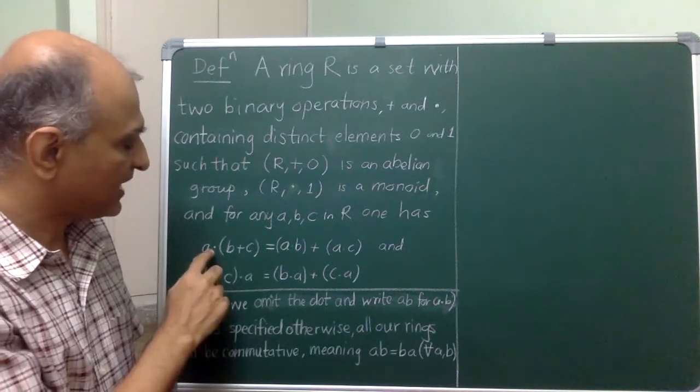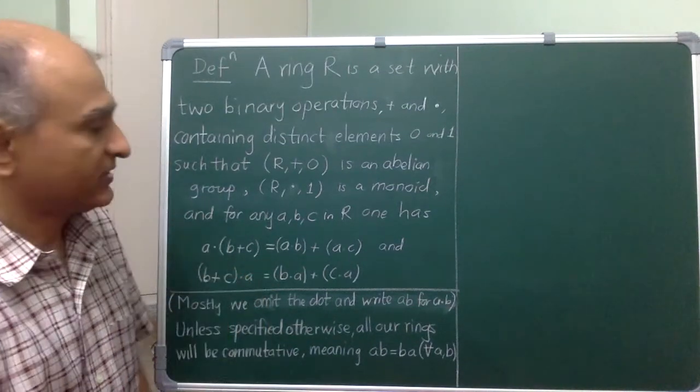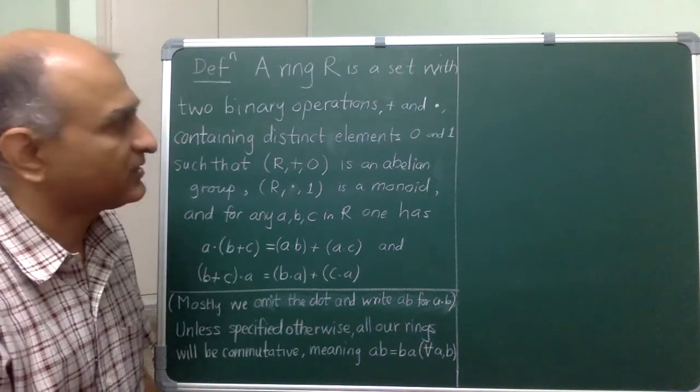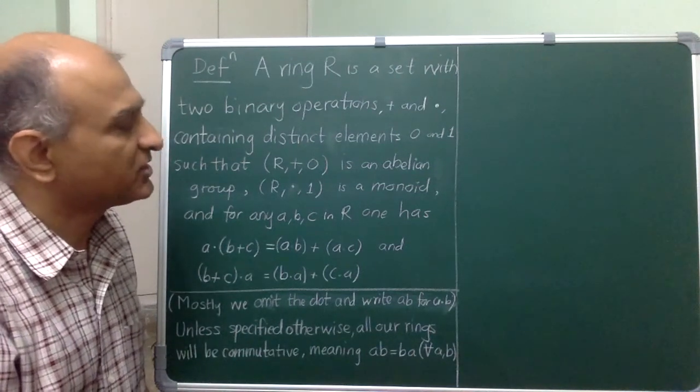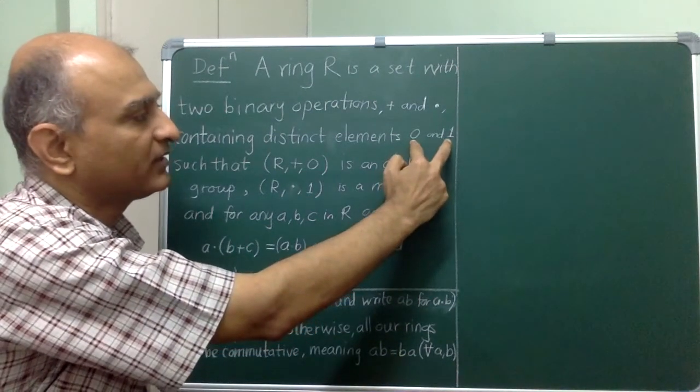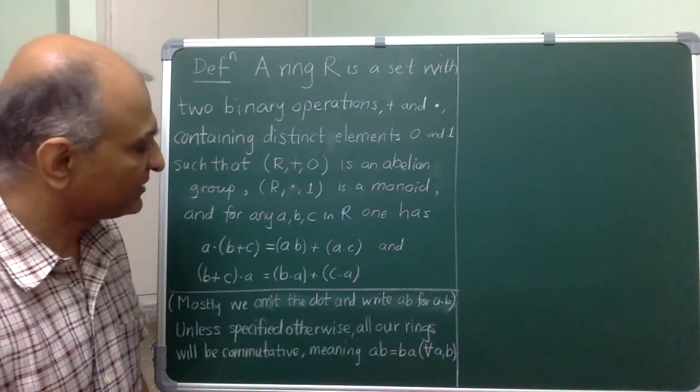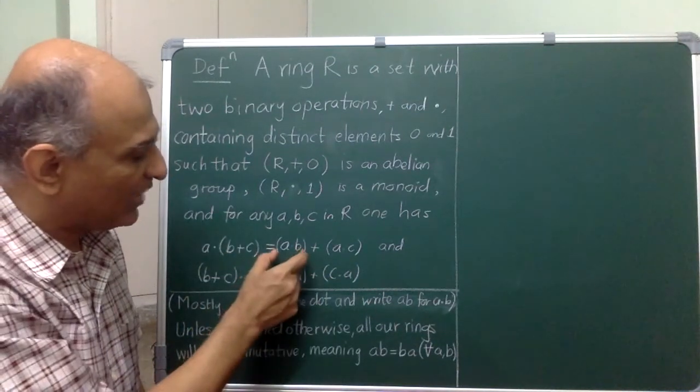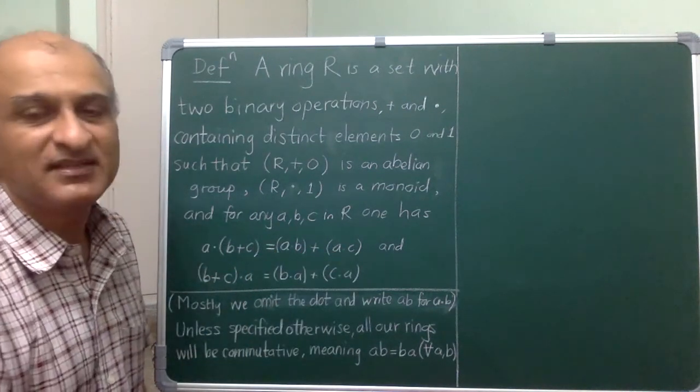Notice that until now the operations of addition and multiplication they do not talk to each other but we do want them to do that. We do want them to be compatible and so this is the all important distributive law. Which means that multiplication distributes over addition in both orders. And another way in which we want this may look like nit-picking and it is in a way another way in which we want addition and multiplication to talk to each other is that we do want the elements 0 and 1 to be distinct from each other and we will say why in just a bit.